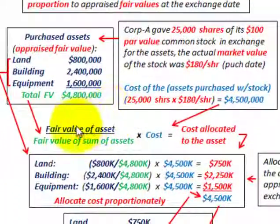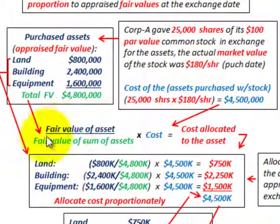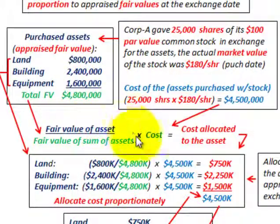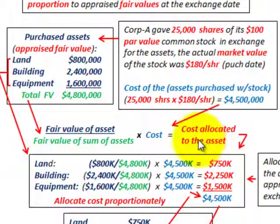We go through this basic equation: take the fair value of each individual asset, divide it by the total fair value of all the assets, then multiply by the total cost. We know our cost is based on the stock issued at $4,500,000. That is how we allocate our cost proportionately to each of the assets.